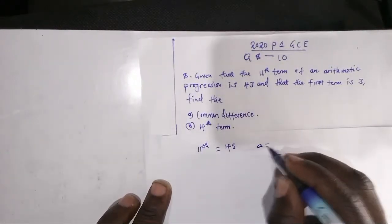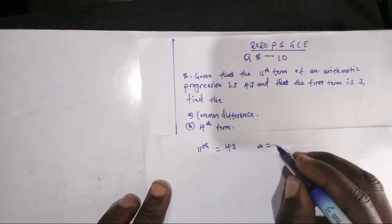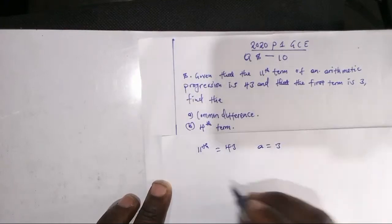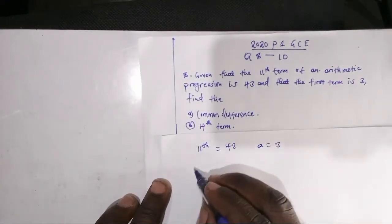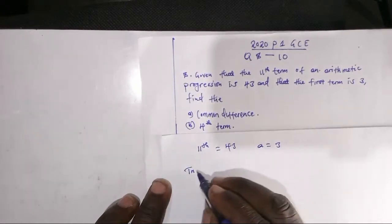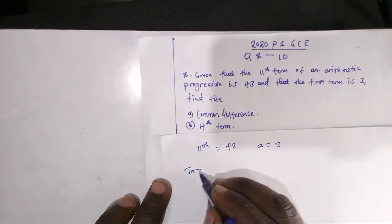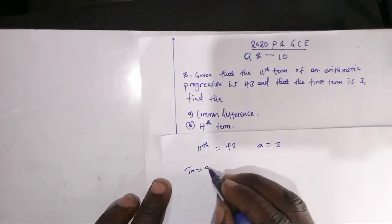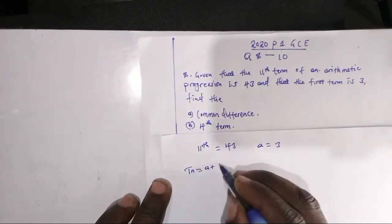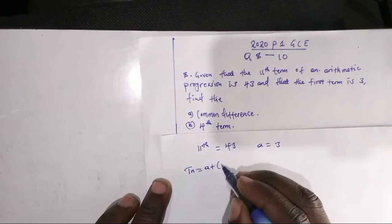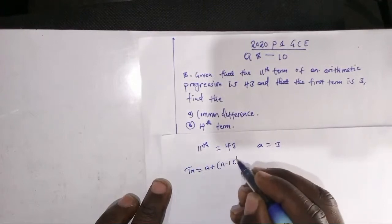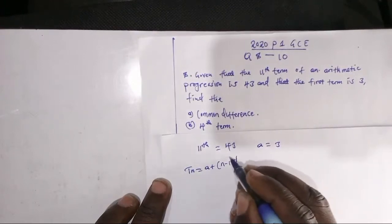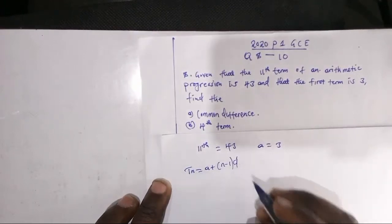The first term is denoted by A, which is 3. We know that the nth term formula for AP is: T_N equals A plus open bracket N minus 1, close bracket, times D.